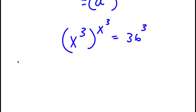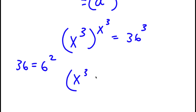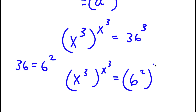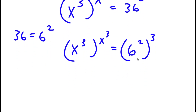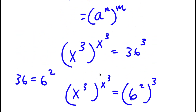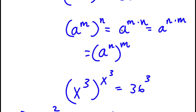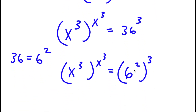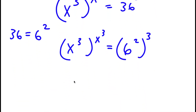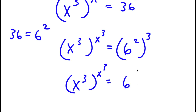Now, 36 I can write as 6 to the power of 2. So now I have x to the power of 3 to the power of x to the power of 3, is equal to 6 to the power of 2 to the power of 3. Using the rule a to the power of m to the power of n equals a to the power of m times n, that gives us 6 to the power of 2 times 3, which is simply 6 to the power of 6.